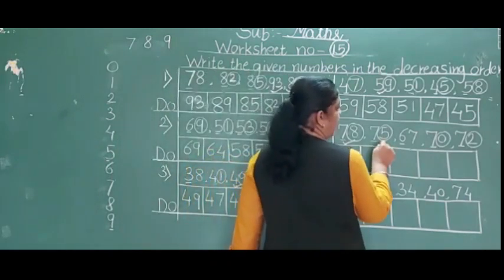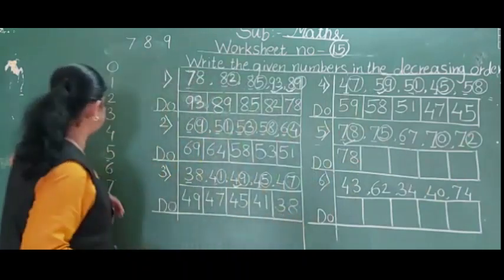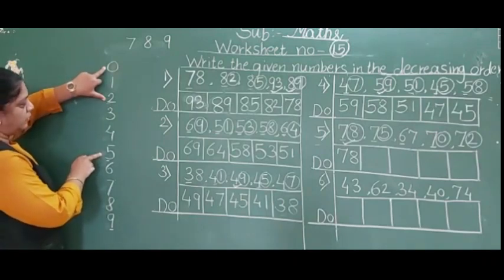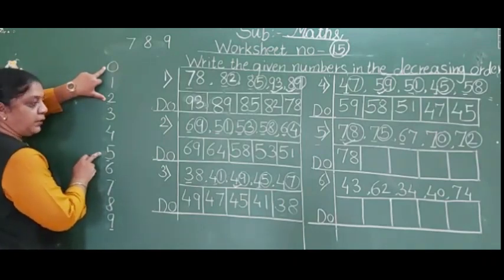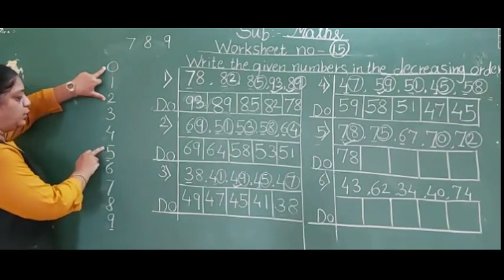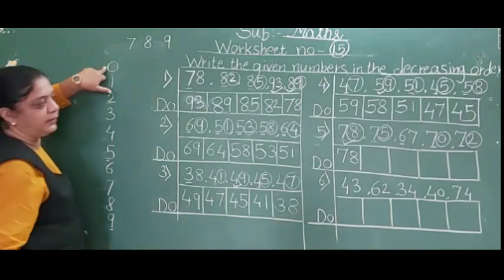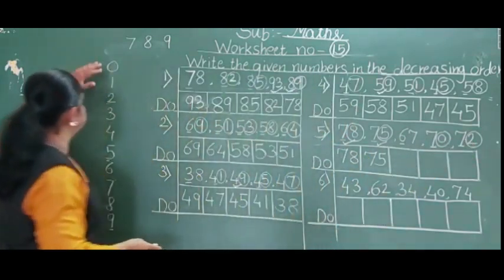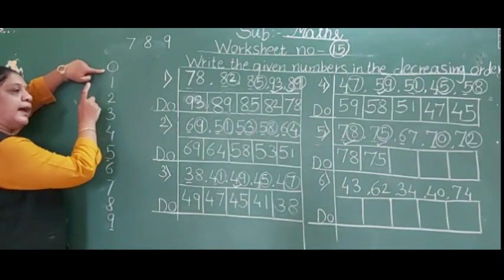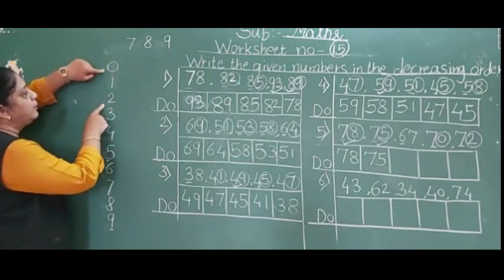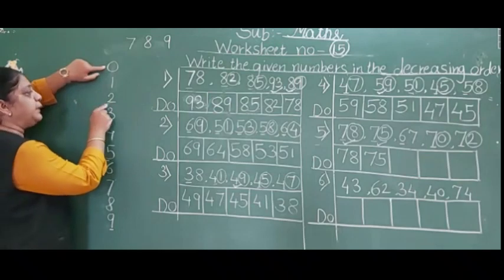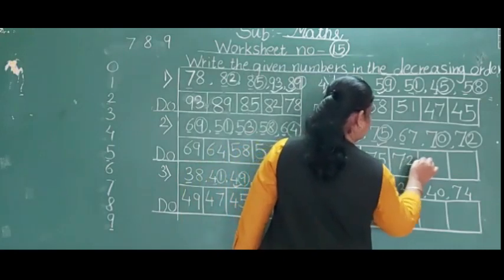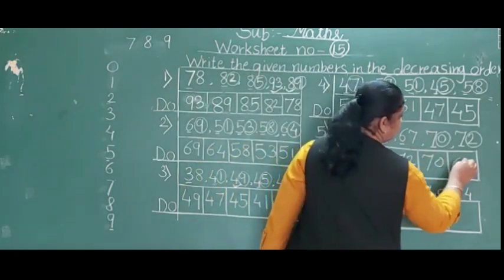78 is the bigger number. Remaining: 5, 0 and 2. Which is below? 5 is below, so 75 comes next. Then 0 and 2 remain — 0 is above (small) and 2 is below (big), so 72 comes before 70. And last is 67.